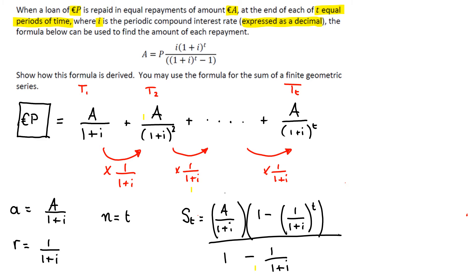So that is our formula and we want to take that formula and work it through to basically make it look like this. So notice that there is no S of T there in that formula that's going to be equal to P, the total amount of the loan.